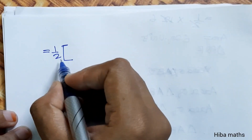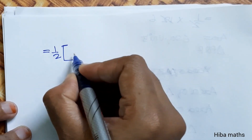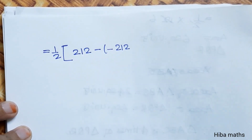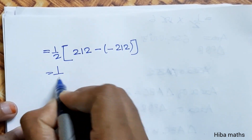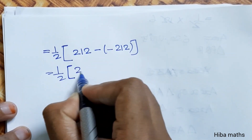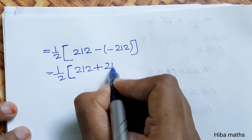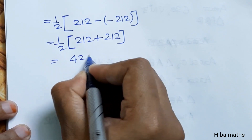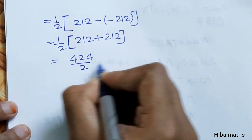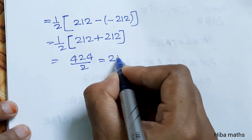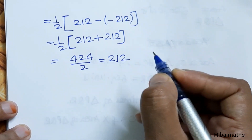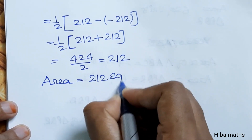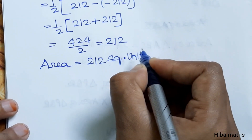Equal to 1/2 into 212 minus of minus 212. Minus into plus gives 212. If we add these terms, we get 424 divided by 2. Two twos are four, two one is two, two twos are four. Therefore the answer is 212 square units.